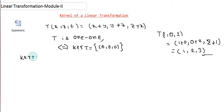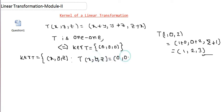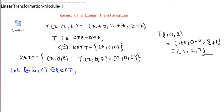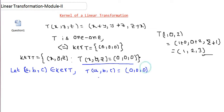The kernel of T is the collection of all vectors (x,y,z) from R³ such that T(x,y,z) equals (0,0,0). Suppose we take any element — let (a,b,c) belong to the kernel of T. If it is in the kernel, then it satisfies this property: any vector (a,b,c) transforms to T(a,b,c) = the zero vector of R³.